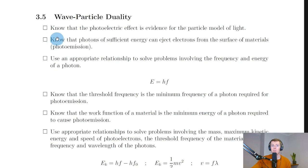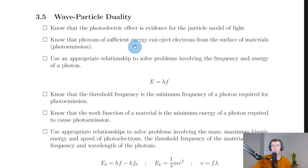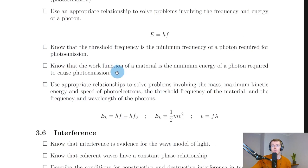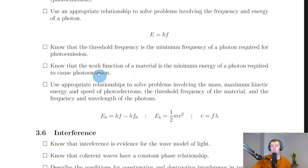Lastly, section five, wave particle duality. The photoelectric effect is evidence for the particle model of light. Photons of sufficient energy can eject electrons from the surface of metals — this is called photoemission, and the whole process is called the photoelectric effect. The incident photons must have energy greater than the work function of the metal, and a frequency greater than the threshold frequency of the material. If these requirements are not met, no photoemission will take place. You need to use E equals hf, where E is the photon energy, h is Planck's constant, and f is the frequency of the photon.